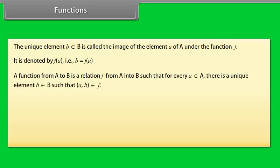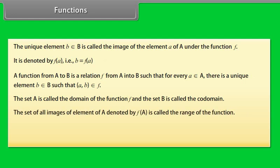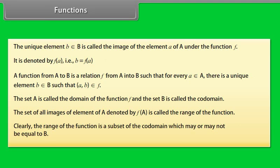A function from A to B is a relation F from A into B such that for every a belonging to A, there is a unique element b belonging to B such that (a, b) belongs to F. The set A is called the domain of function F and set B is called the co-domain. The set of all images of elements of A, denoted by F(A), is called the range of the function. Clearly, the range is a subset of the co-domain.